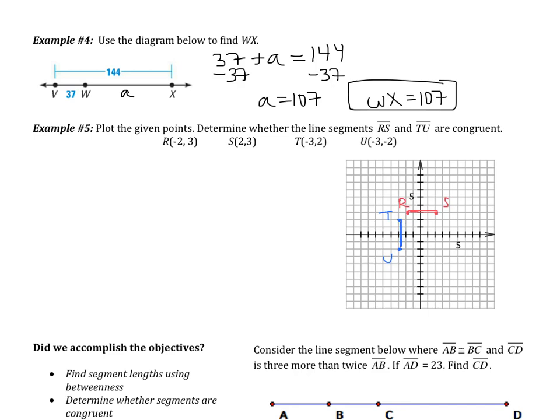This is what you should have gotten. The question is, determine whether the segments RS and TU are congruent. So I'm going to draw in those segments. I'm going to draw in RS, and then I'm going to draw in TU. We have to remember that congruent means they have the same measure. In this case, we're talking about line segments. The way we measure line segments is with length. So the question is really asking, do RS and TU have the same length? Well, let's find the length. For RS, I just need to count the boxes. So I have one, two, three, four boxes. So RS is four units long.